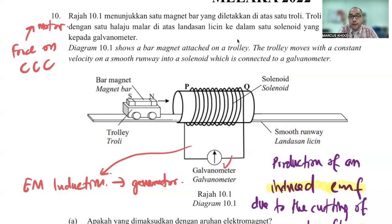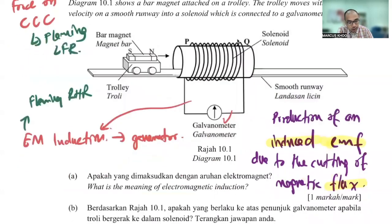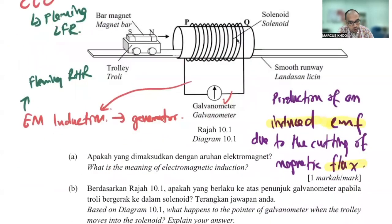When talking about force on the current-carrying conductor, you use Fleming's left-hand rule. For EM induction, you use Fleming's right-hand rule. Together with EM induction, there is also Faraday's law and Lenz's law — these always come together.